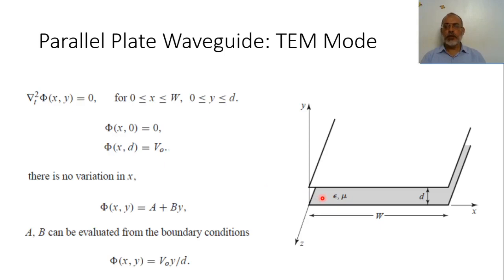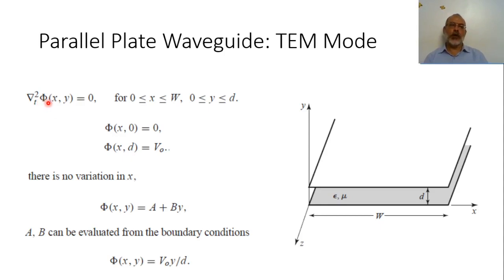From the geometry of the structure, we are going to assume that the potential in this case is independent of x, such that it is constant in x and varying only in y. So the nabla-T squared operator reduces to just the second partial derivative with respect to y, and we set that equal to zero. By integrating once, we get a constant; integrating again, we obtain phi as a constant A plus another constant B multiplied by y.